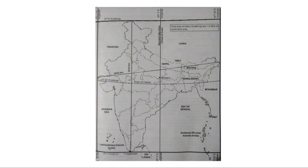The neighbouring countries of India are: Pakistan, China, Tibet, Nepal, Bhutan, Bangladesh, Myanmar and Sri Lanka. The surrounding oceans are: Arabian Sea, Indian Ocean and Bay of Bengal. The Andaman and Nicobar Islands are in the Bay of Bengal, and Lakshadweep is in the Arabian Sea. These are all part of India.